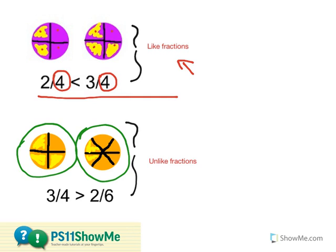Since I'm working with fourths over here, I've split this shape into four equal parts. And with this circle over here, I've split this circle into six parts because I'm working with sixths. My next step would be to shade in the total number of pieces out of the whole.